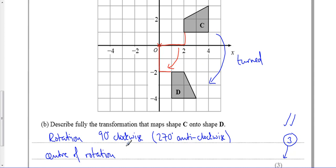So the centre of rotation, for the final mark, you've got to say is (0, 0), and that will get you a third mark. If you don't say all of those things, you can't get the maximum of three.